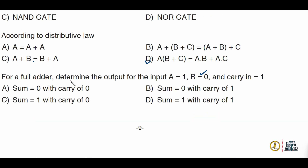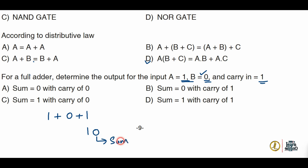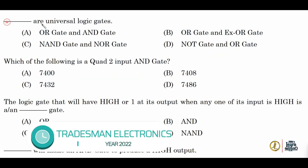Next question: for the full adder, determine the output for inputs A = 1, B = 0, and carry-in = 1. A full adder is a circuit that adds 3 bits at a time. So we add 1 + 0 + 1. We know 1 + 0 = 1, and 1 + 1 = 10, where 0 is the sum and 1 is the carry. Option B is correct: sum = 0 with a carry of 1.